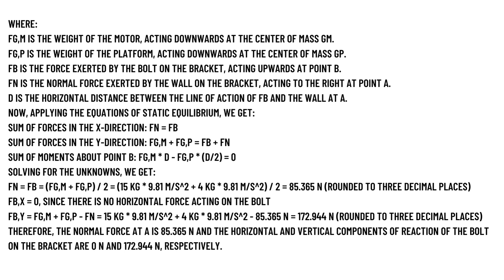FN is the normal force exerted by the wall on the bracket acting to the right at point A. D is the horizontal distance between the line of action of FB and the wall at A.